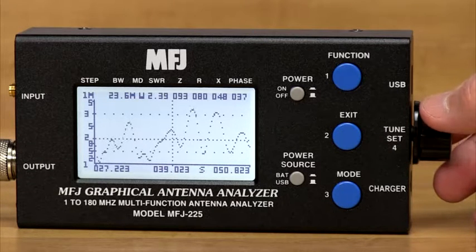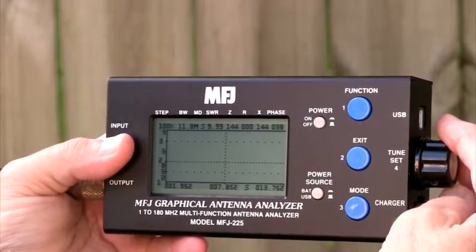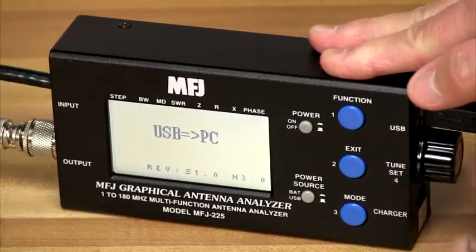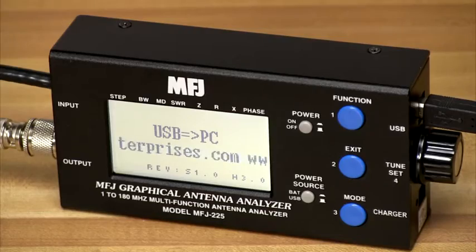It's two analyzers in one. Out in the field, the MFJ-225 is a compact, self-contained handheld analyzer. On the bench, it's a full-fledged 2-Port S21 desktop machine when teamed up with your PC.